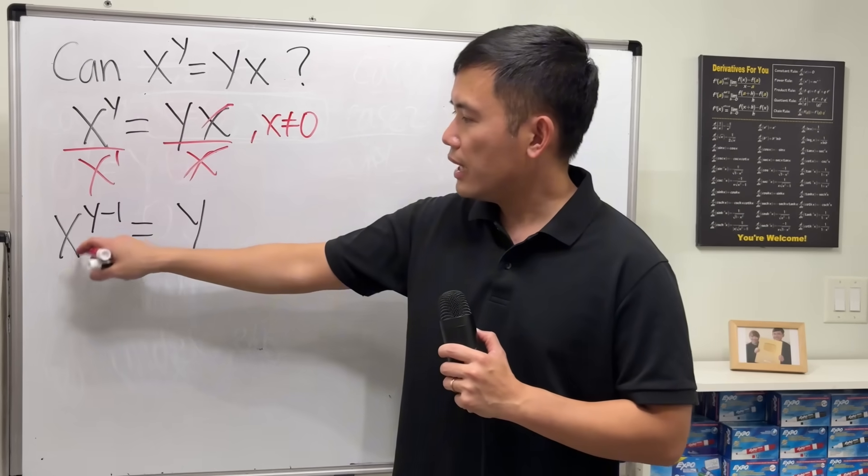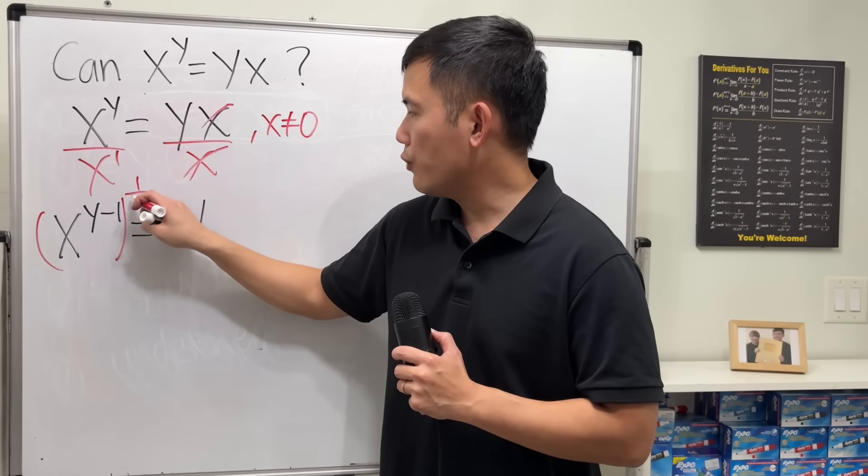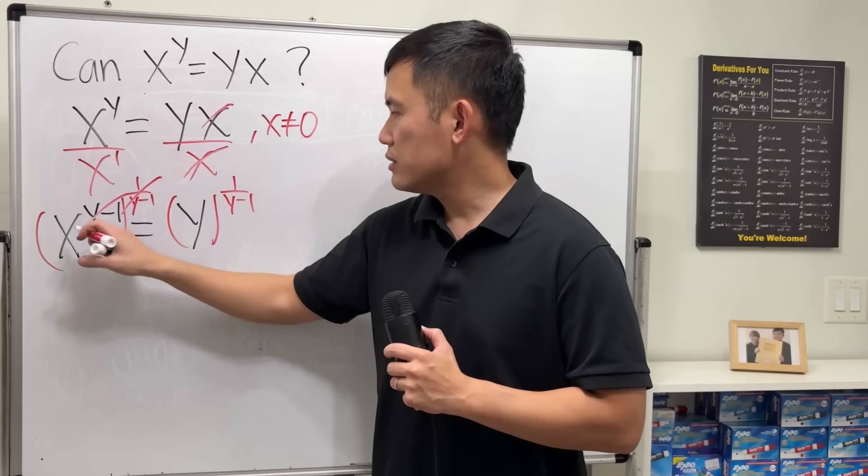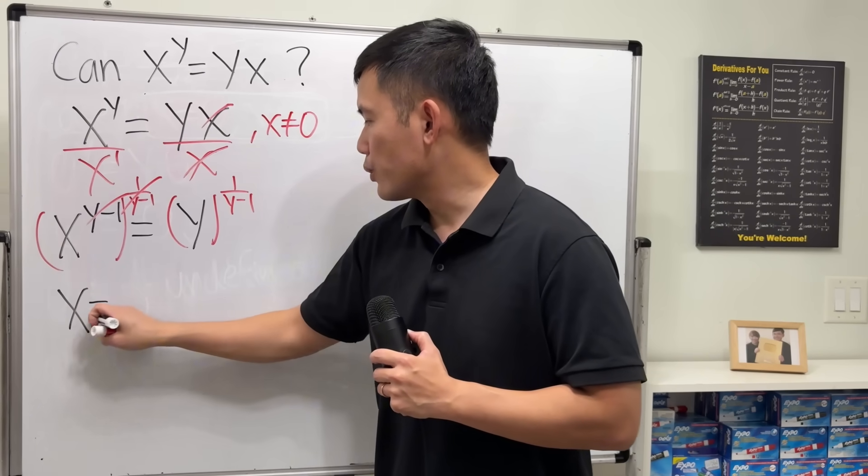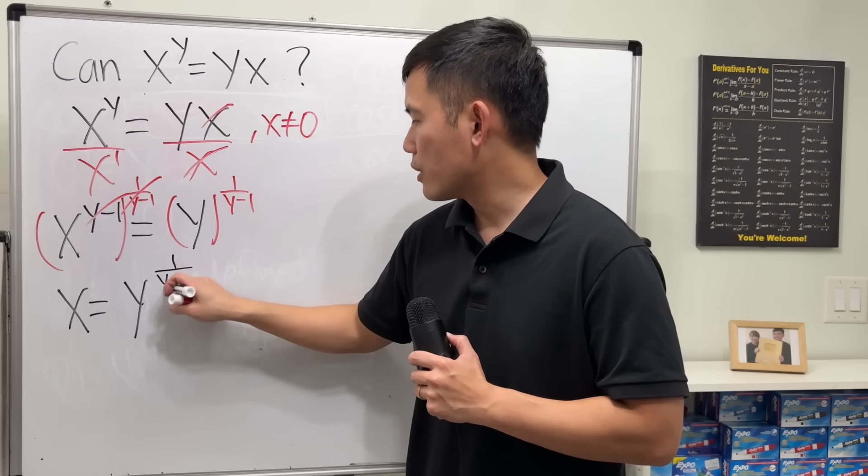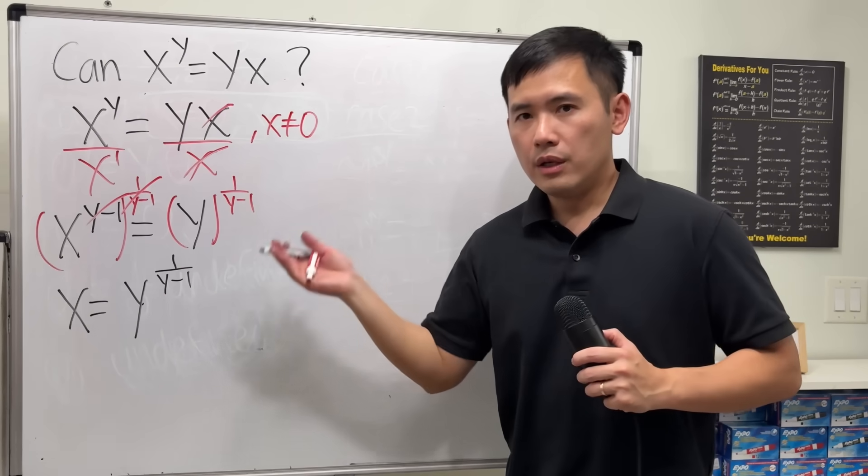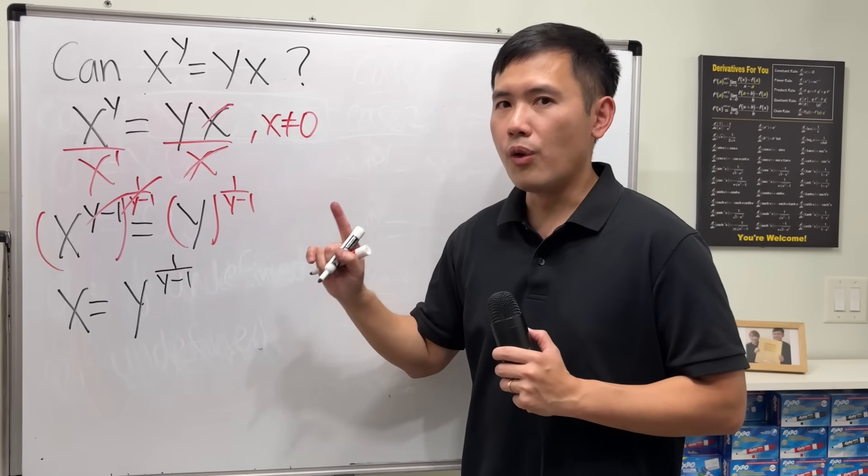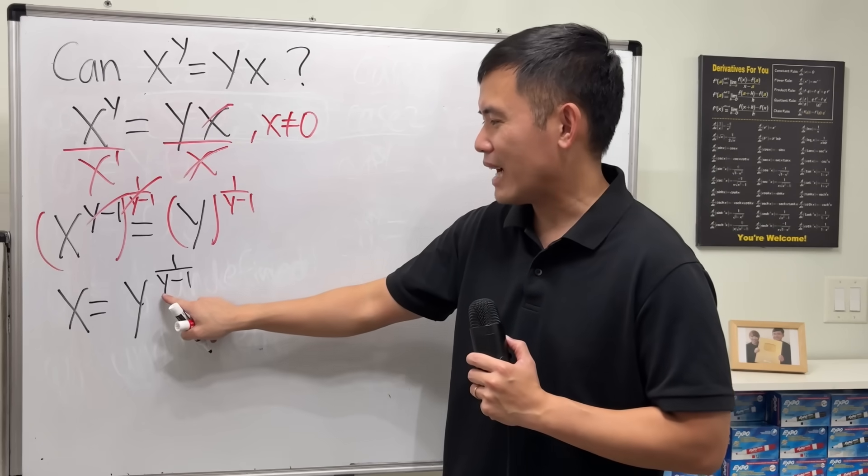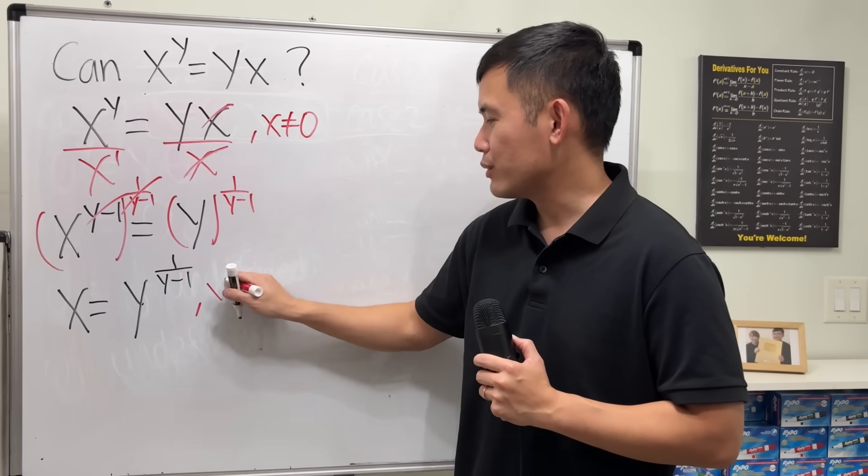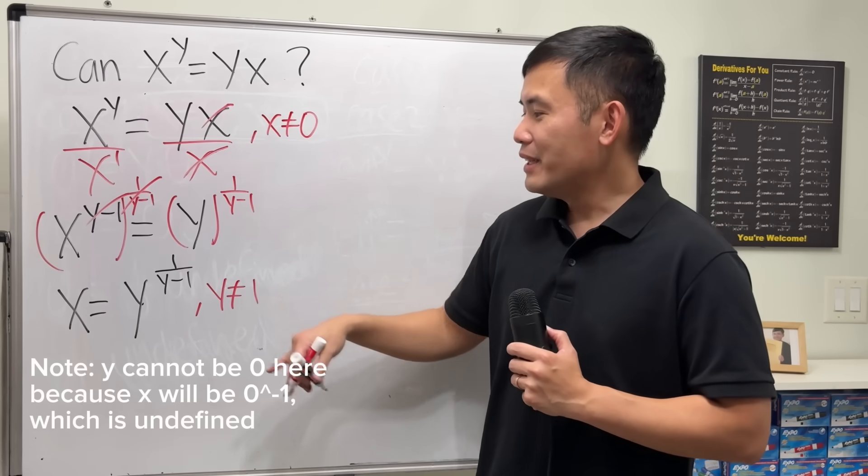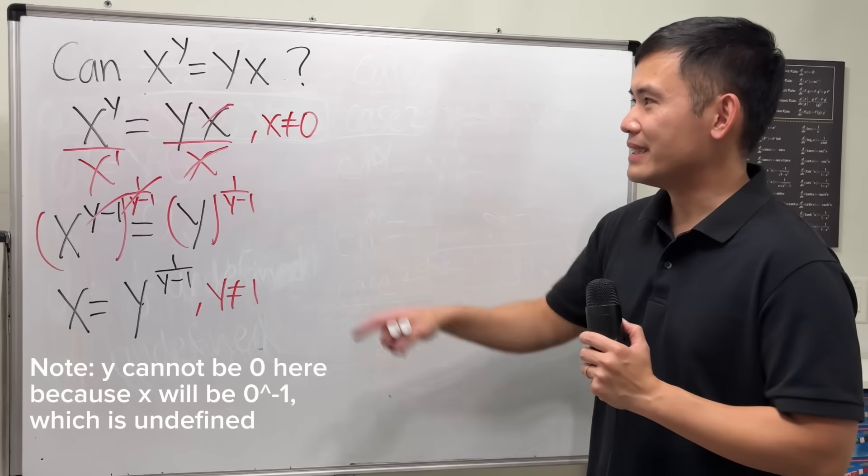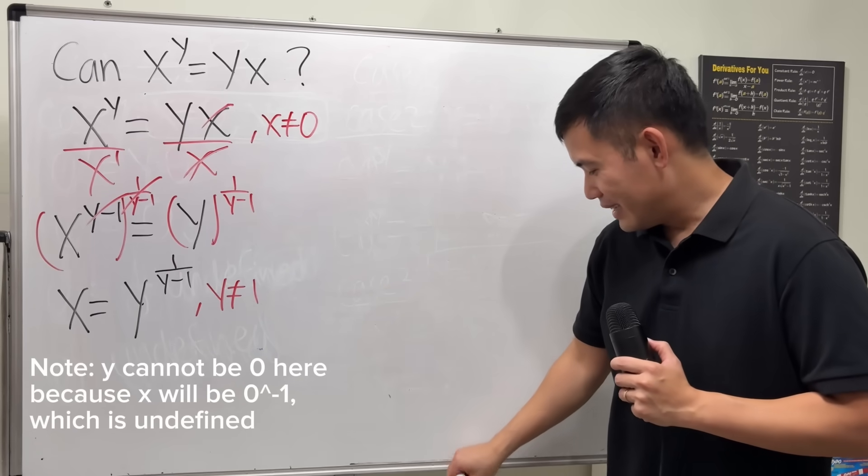And then we can get x by itself by raising both sides to 1 over y minus 1, so that this end of cancel. We get x is equal to y raised to the power of 1 over y minus 1. So what this means is that, go ahead and pick any value for y except for what? The 1. Because it happens to be in the denominator, so we have to impose another condition. Then you can pick any other y value. Work that out. Then you get the x value, and then that will make this work. So let's have a look real quick.